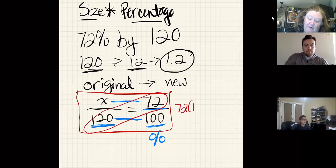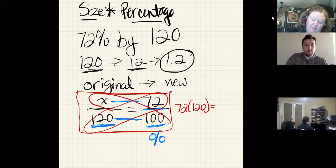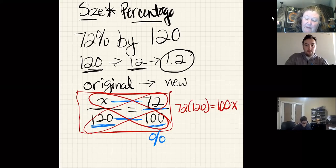72 times 120 is equal to 100 times x. I could multiply this and then divide both sides by 100, which is a little bit more challenging than what we saw the people up here saying.